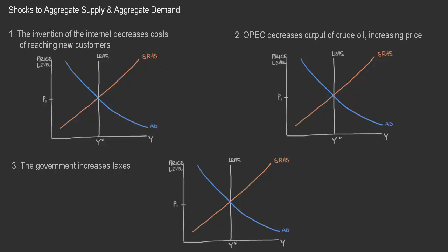We want to consider a few shocks to aggregate supply and aggregate demand and take a look at what that might look like in the model. We've got a couple of scenarios that could take place. You could go through hundreds of scenarios with different types of shocks to aggregate demand or aggregate supply, short run and long run, and think through what those changes would be. This is just to scratch the surface and give us a feel for the things we need to consider when thinking about shifts in these curves.